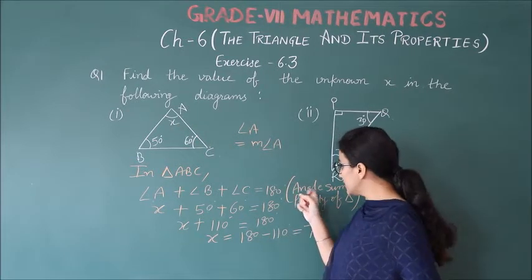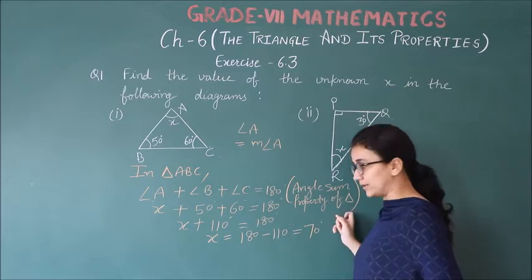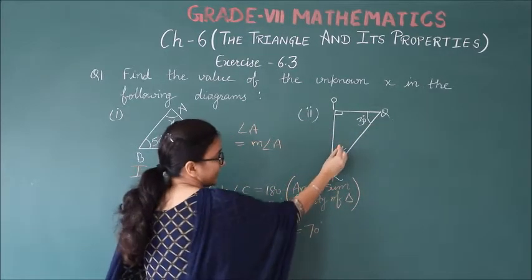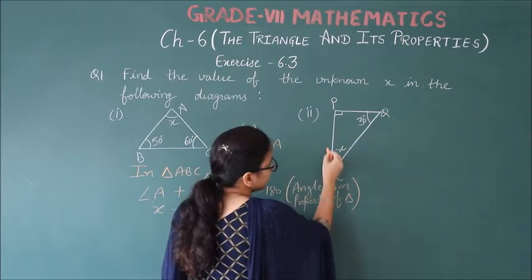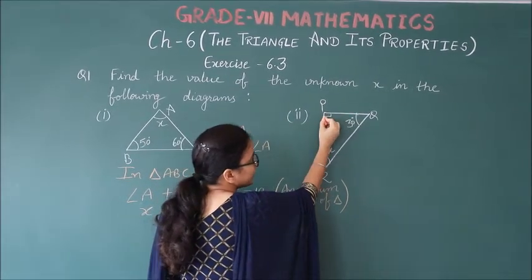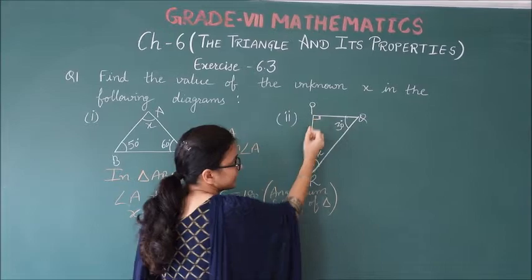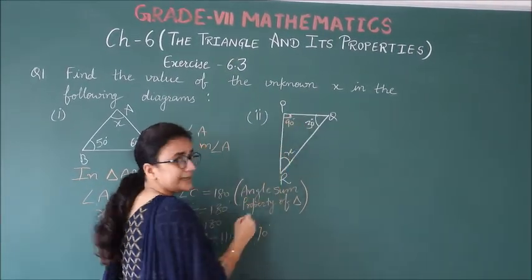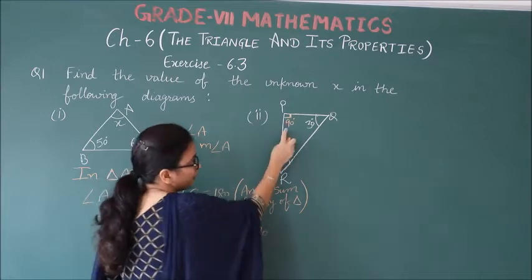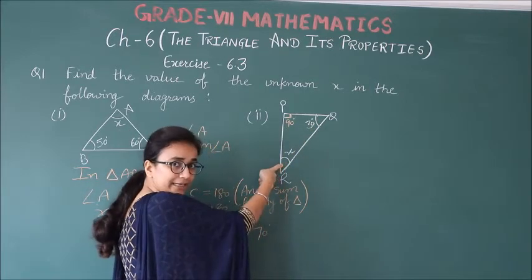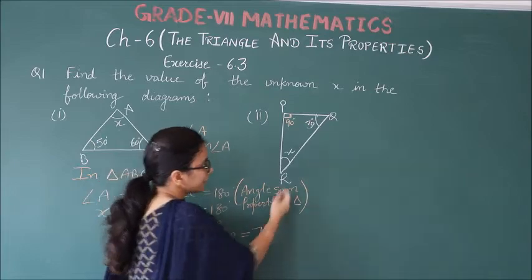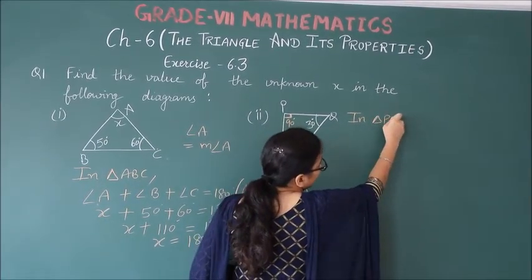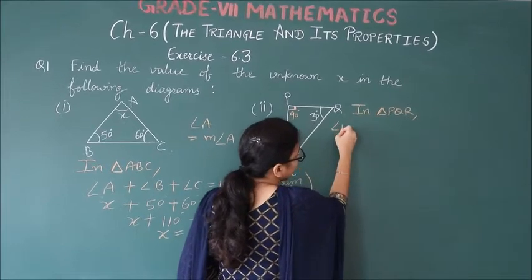First part where the unknown angle x is 70 degrees. Same, the second part is triangle PQR. Angle P right angle means 90 degrees, Q given and R unknown x. We find x similarly.